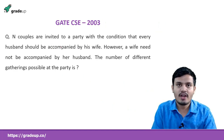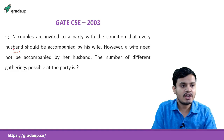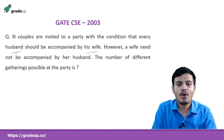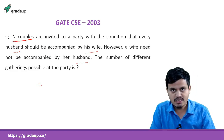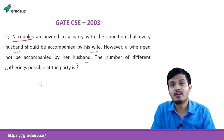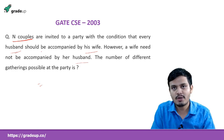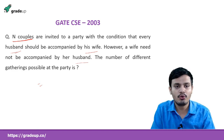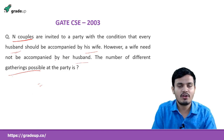Now see this problem — it is also very interesting. Pause the video and try to solve it. N couples are invited to a party with the condition that every husband must be accompanied by his wife. However, a wife need not be accompanied by her husband. We need to find how many different gatherings are possible at the party.